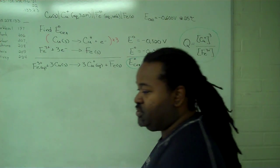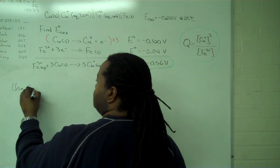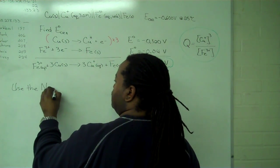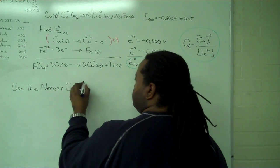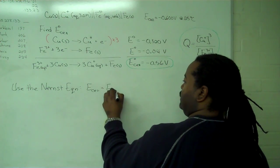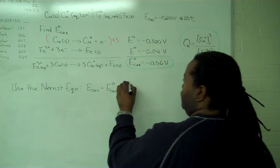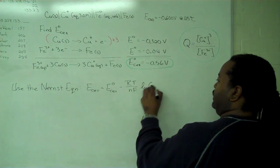will allow us to execute this third step, which is to use the Nernst equation. Namely that E cell equals E cell standard minus RT over NF ln of Q.